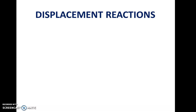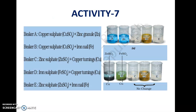Now we are going for the displacement reaction. What happened in beaker A and beaker B: the copper was displaced by zinc in beaker A, and in beaker B iron displaced the position of copper. So copper settles down in both beakers, and the solution becomes zinc sulfate in beaker A and iron sulfate in beaker B.